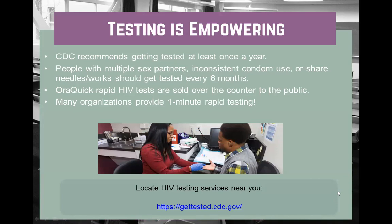Getting tested is very important. The CDC recommends that folks get tested at least once a year. However, if folks are having sex with multiple partners, or have a partner who has sex with multiple partners, or have any kind of behavior where they come into contact with the five fluids with different folks, they should get tested every three months — and at minimum every six months.